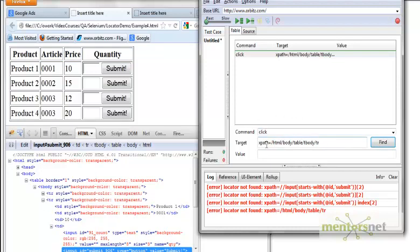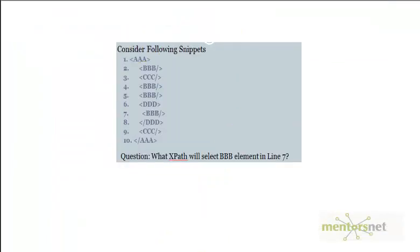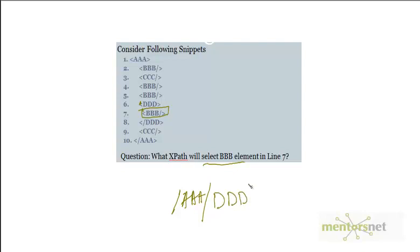Next question: consider the following snippet and write an XPath to select element number 7. Let's travel the node — it will be slash AAA, then all the way to D, because B and C come before it, and line 7's element B exists under slash DDD. So the answer is slash AAA slash DDD slash BBB, which selects that XPath node.